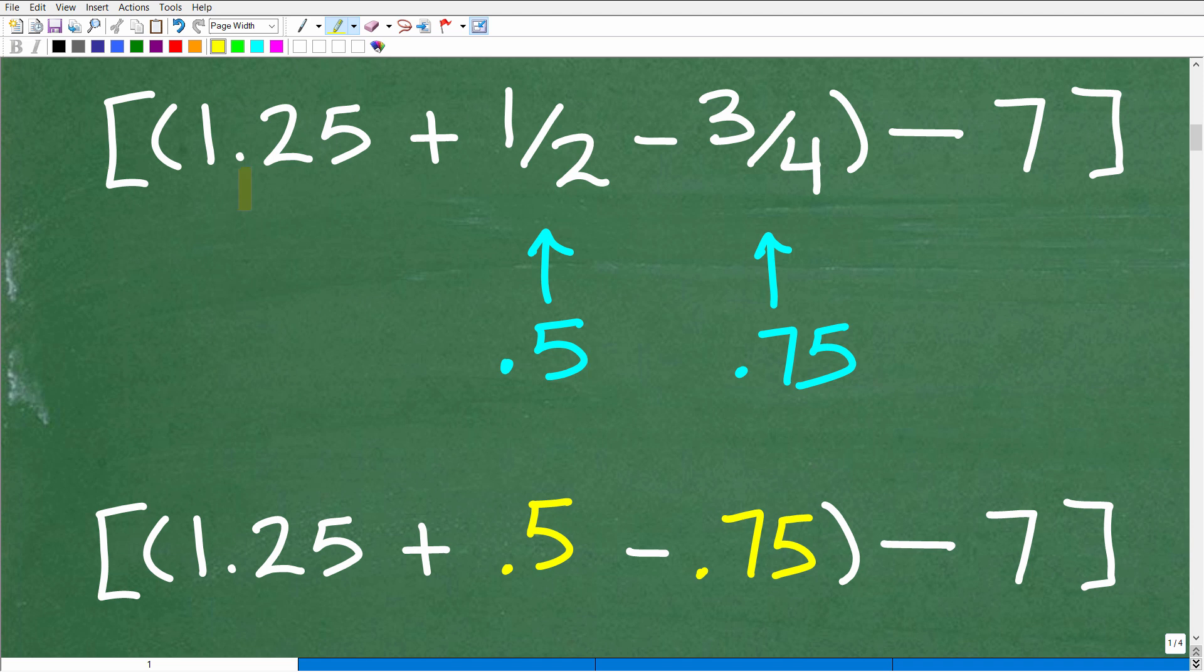Okay, so here we have decimals and fractions. We're going to have to work with either all decimals or all fractions. So what I'm going to do is I recognize one-half, the fraction one-half, and the fraction three-fourths as these decimals here. One-half is the decimal 0.5. So I got this decimal here, 1.25. I'm thinking, well, I know what the decimal equivalent is of one-half. Now, I know what it is, and you should know what it is as well.